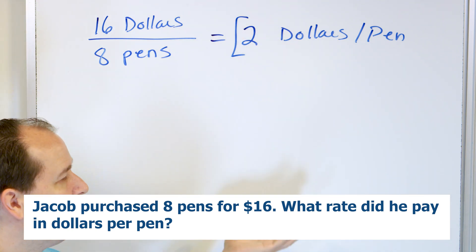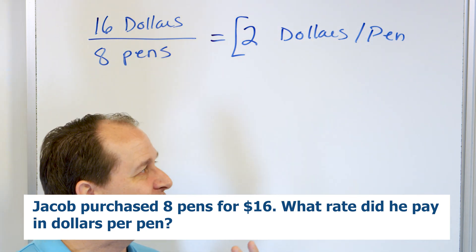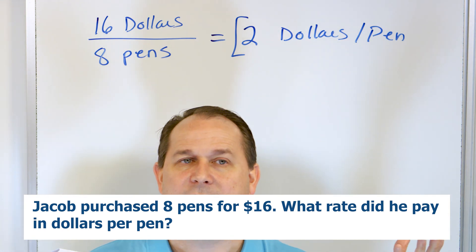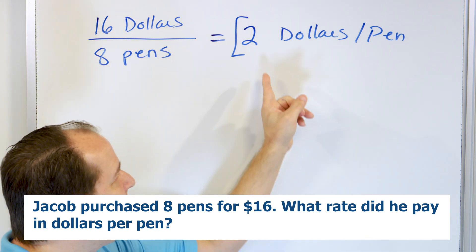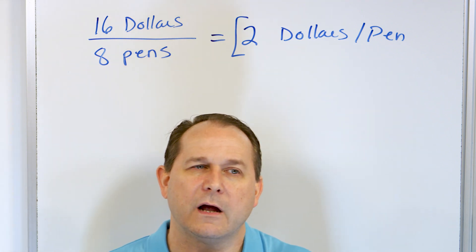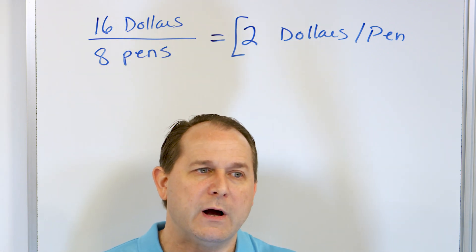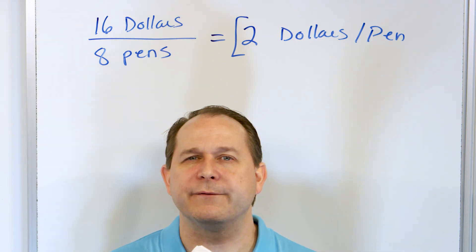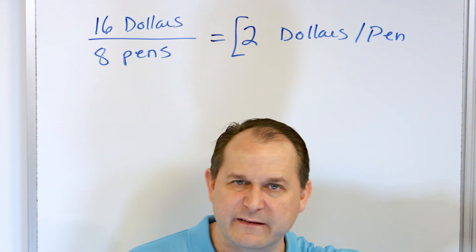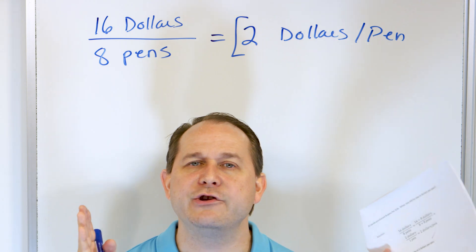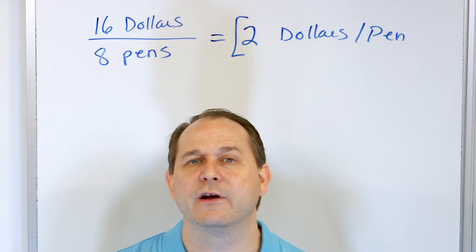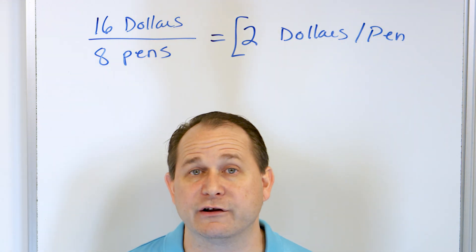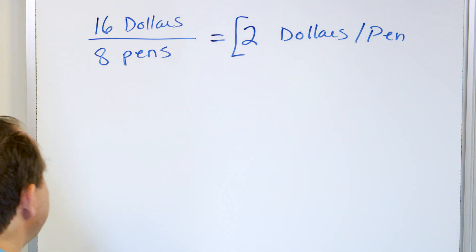Does it make sense that it would be $2 per pen? Well, the first pen's $2, the second pen's two more dollars, the third pen's two more dollars. If you actually had eight pens, which is what we have, then two times eight is 16 total dollars. So the total cost is $16, the total number of pens is eight of them, but the unit cost — the unit price of a pen — is you're paying $2 per pen. And that is a really important thing because a lot of times when you're shopping, people can trick you into spending too much money. The way to compare two different situations is to find the unit price — how many dollars per pen is in this box — and then you're comparing the same things, which is what we call the unit rate.